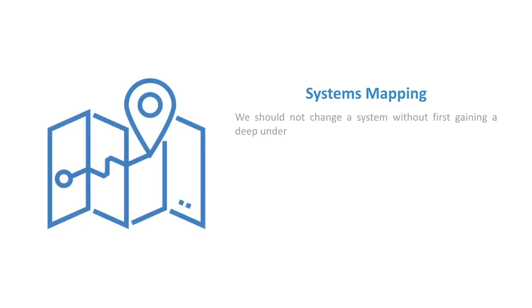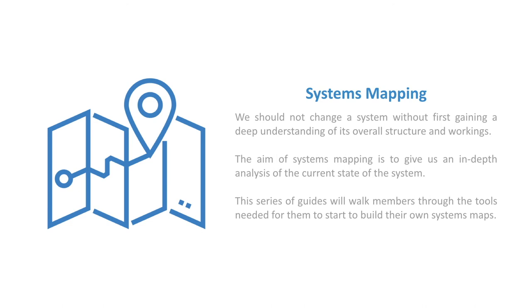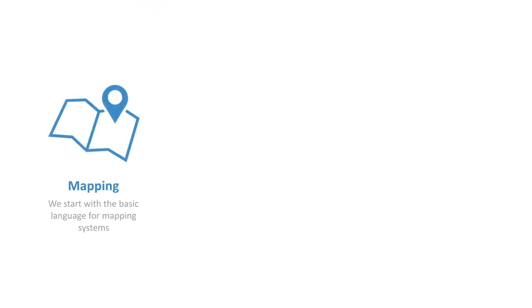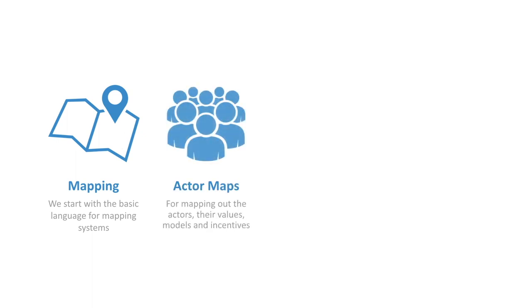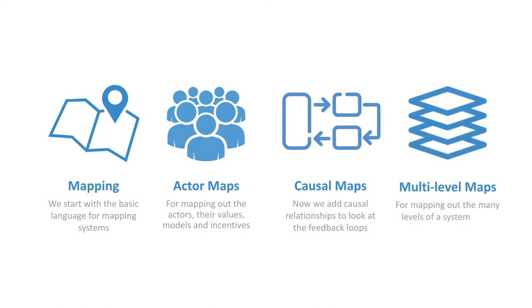Then it comes to systems mapping. We should not change a system without first gaining a deep understanding of its overall structure and workings — you will get unintended consequences if you don't. The aim of systems mapping is to give an in-depth analysis of the current state of the system. The guides walk you through tools including: basics of systems mapping, actor mapping for mapping actors and their values, models and incentives, causal loop and system dynamics models, the iceberg model, and multi-level maps for mapping the system on different levels.